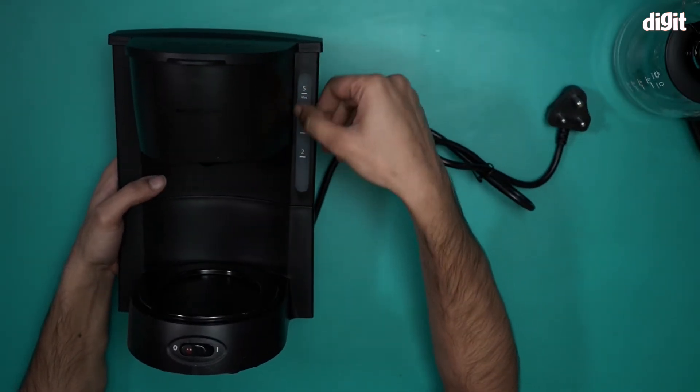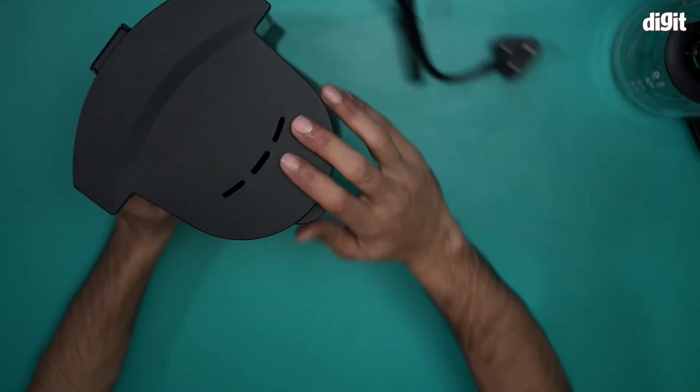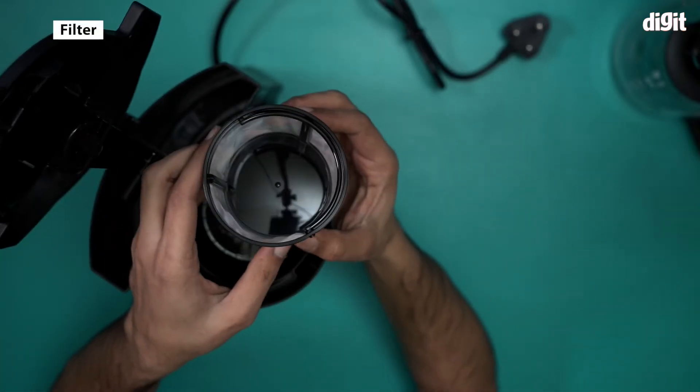Not just that, it shows you how much coffee you can make at the moment with this meter right over here, and this is the on off button as you can see. The coffee goes in from the top.